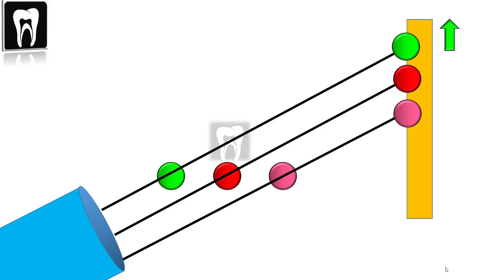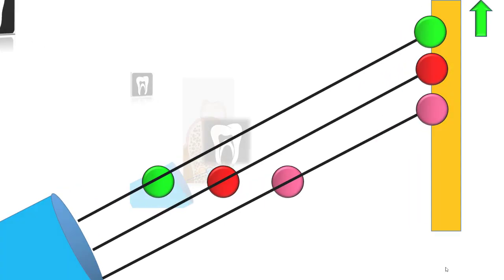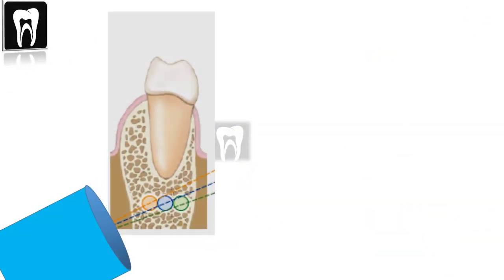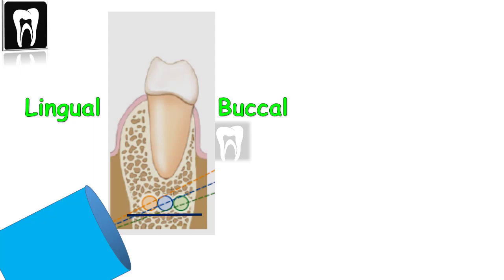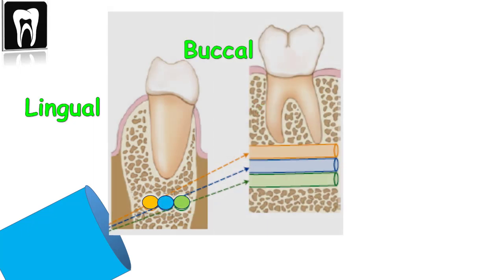Let's look at an example using the mandibular molar and three different positions of the mandibular canal. This schematic view represents a coronal cross-section through the mandible, showing three potential locations of the mandibular canal. All three positions lie in the same horizontal plane but differ in buccal-lingual position. Owing to the angulation of the x-ray beam, the lingually positioned canal shown in orange is projected closer to the apex of the molar, whereas the buccally positioned canal shown in green is projected farther away from the root apex.